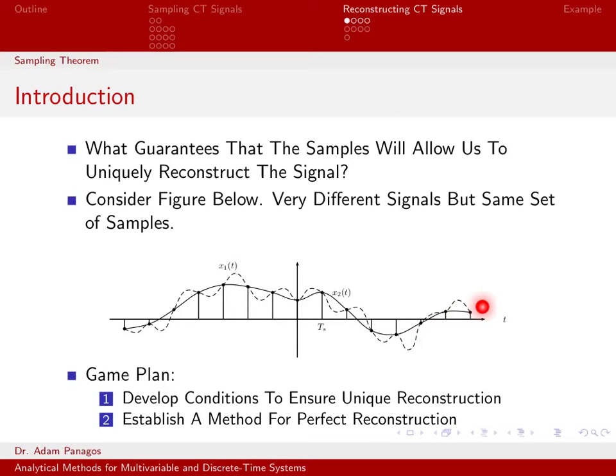What we need to do is understand the conditions for unique reconstruction, meaning given a list of samples, there's just one signal that goes through them correctly. And then we need to figure out how we're actually going to do the reconstruction. First, we need to understand what ensures unique reconstruction. And then once we know what that condition is, we'll figure out how to do the reconstruction. Unique reconstruction is just a fancy way for saying there's just one signal that can go through these samples, not a whole bunch of them.